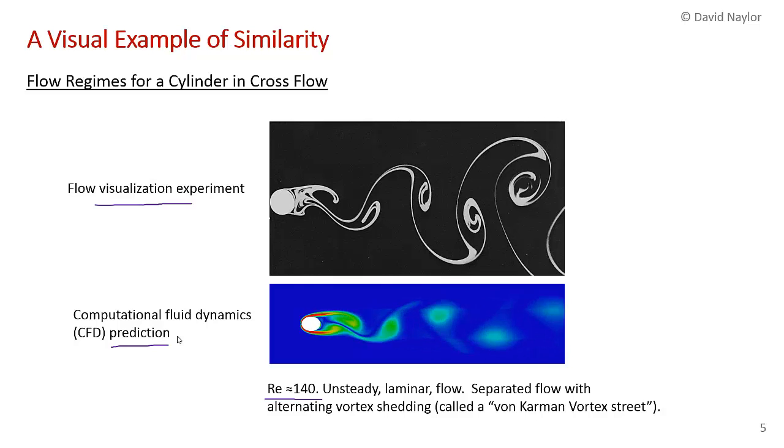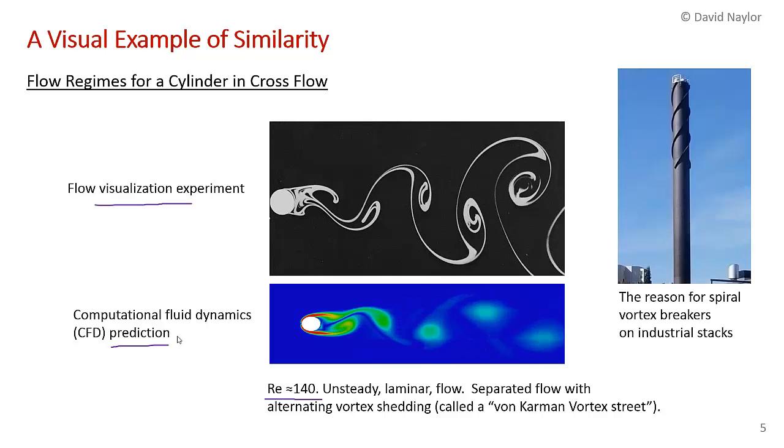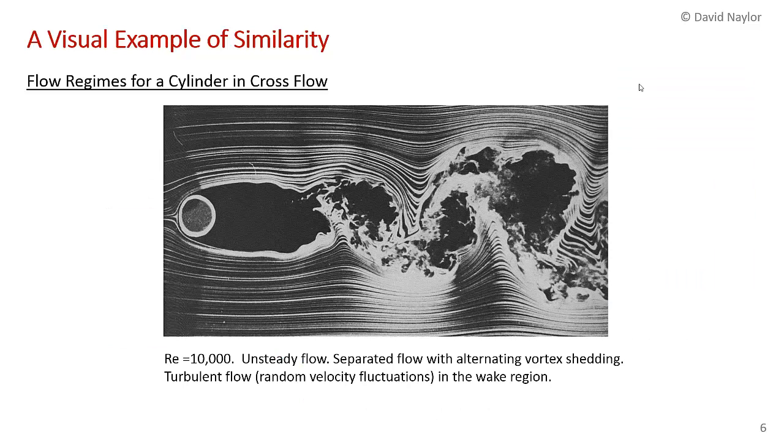At higher Reynolds numbers you get separated flow with alternating vortex shedding. This phenomenon is called a von Karman vortex street after a famous fluid dynamics researcher. That's the reason why very tall chimneys tend to have spiraled vortex breakers to disturb that steady vortex shedding, because it would cause the chimney to vibrate.